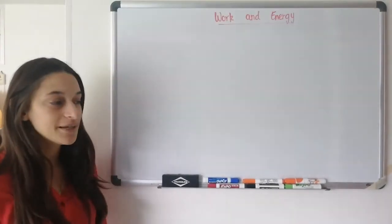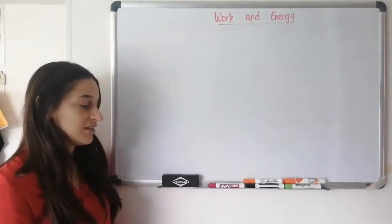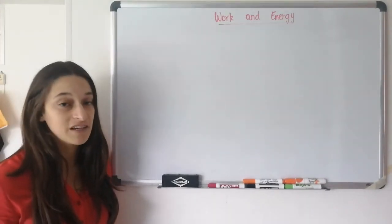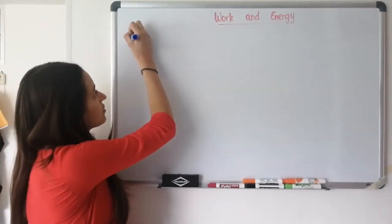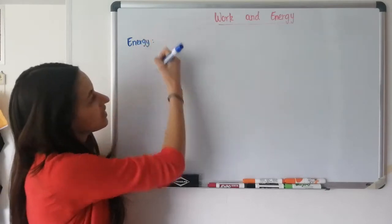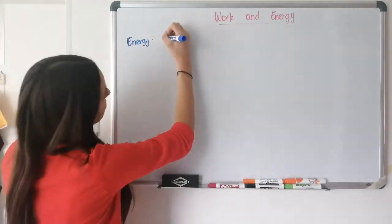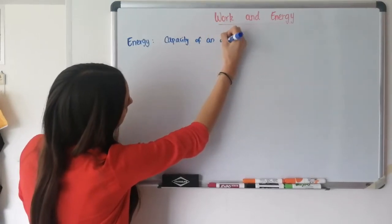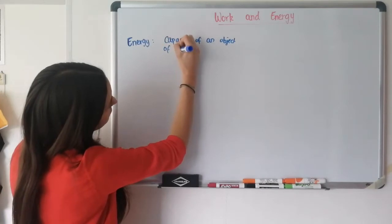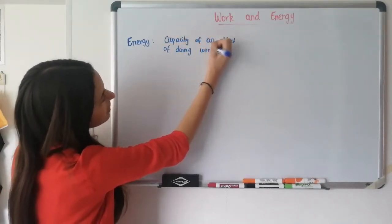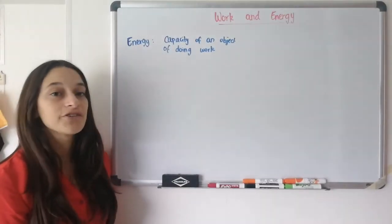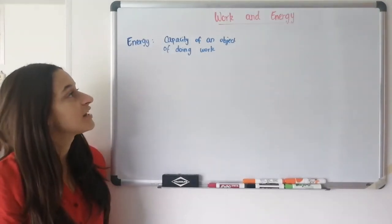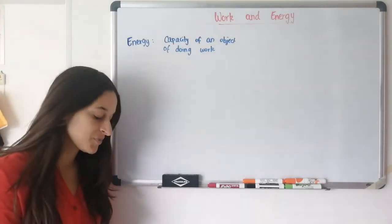The second topic today that we're going to relate back to work is energy. It's a word you've probably heard many times in your life, but in physics it has a specific definition. Energy in physics is defined in terms of work — it is the capacity that an object has of doing work. You need energy to do work, just like in real life: if you have no energy and you're feeling very tired, you won't be able to do any work.